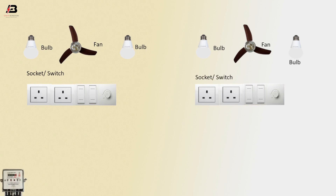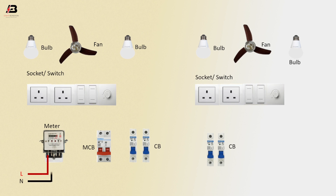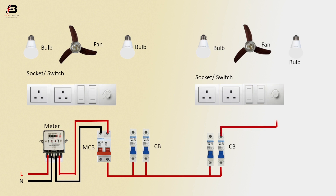The components include an energy meter, double pole MCB circuit breaker, single pole circuit breakers (two), and another two single pole circuit breakers. Phase connection input goes to the energy meter, neutral connection input goes to the energy meter. Phase connection output from the energy meter connects to the MCB circuit breaker. Neutral connection from the energy meter also connects to the MCB circuit breaker. Phase connection from the MCB circuit breaker connects to all single pole circuit breakers.